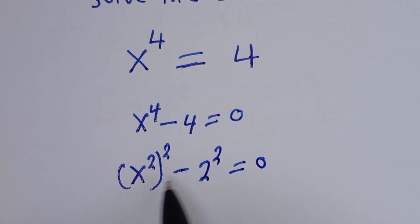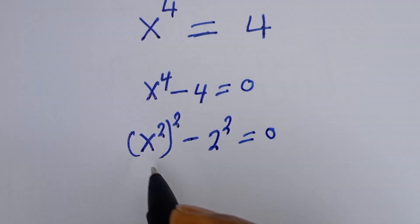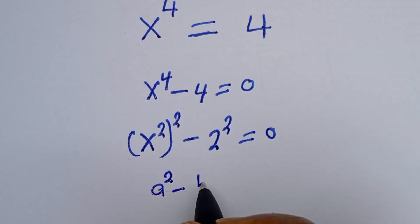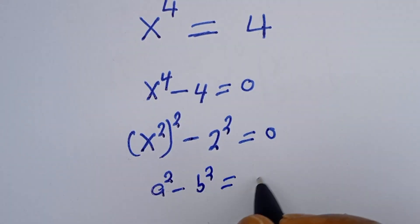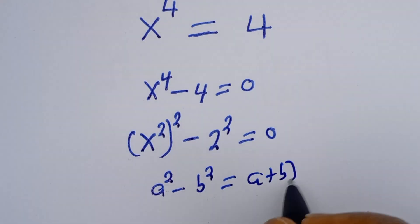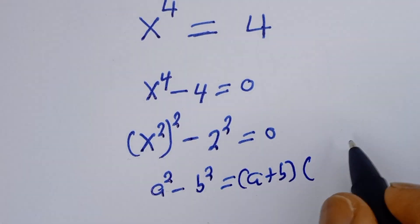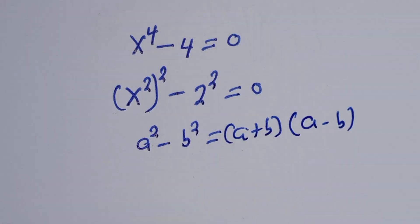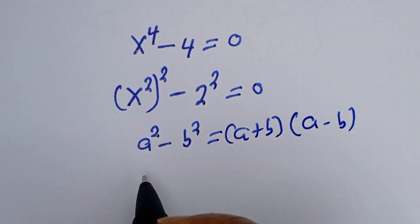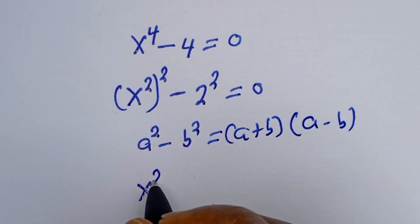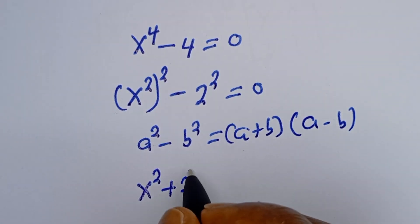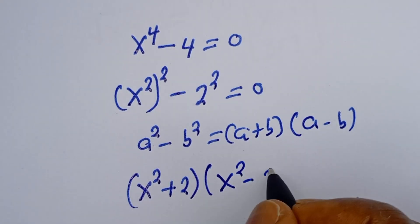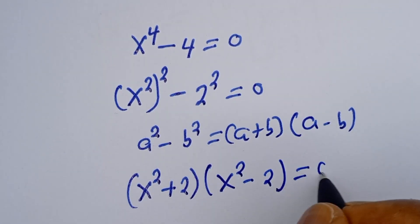If you look at this, this is in the form of a perfect square difference, that is a squared minus b squared is equal to a plus b brackets a minus b. Here we have s squared plus 2 in brackets, times s squared minus 2, is equal to 0.